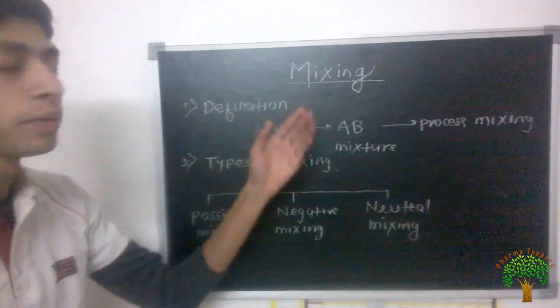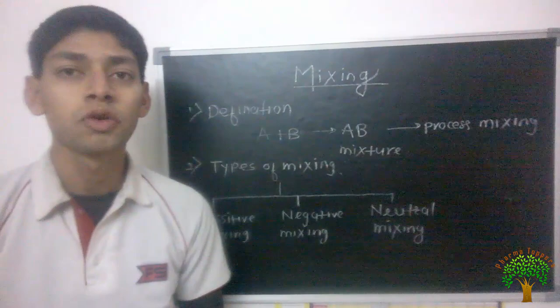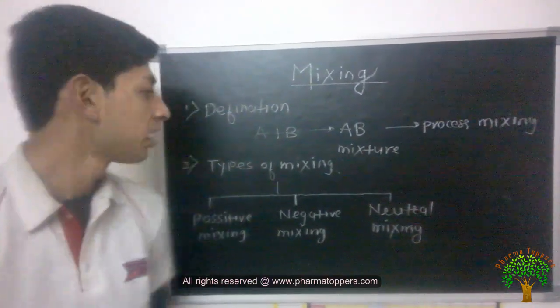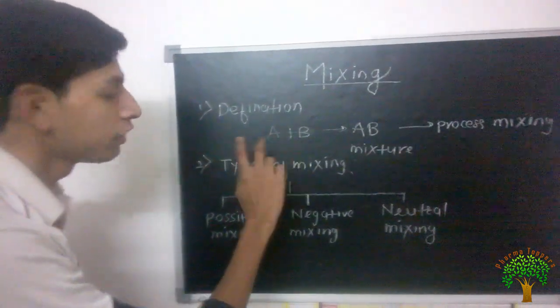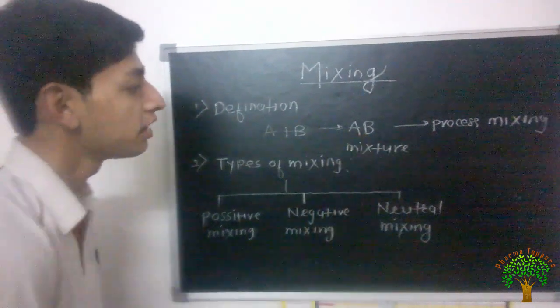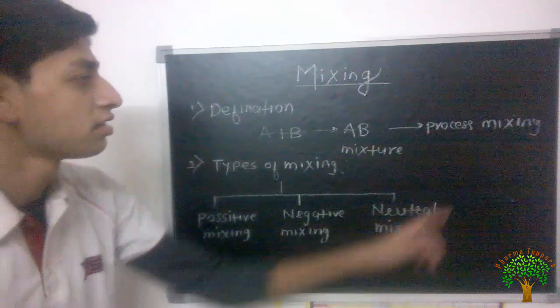Today we are going to discuss about mixing. Now first of all, what is mixing? Mixing is a process in which two components are mixed to each other. Here we can see that A and B both are individual components, but when they are mixed to each other, it forms AB. It is called a mixture and the whole process is called mixing.